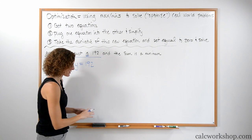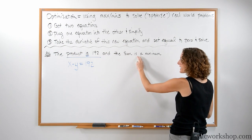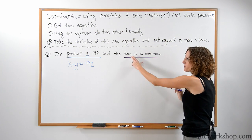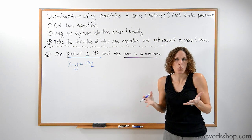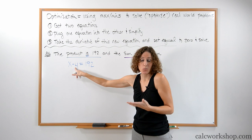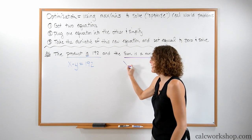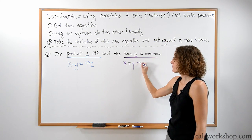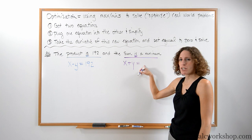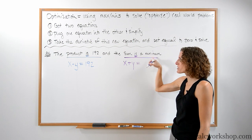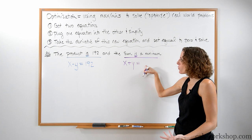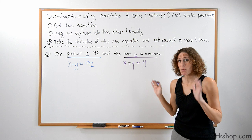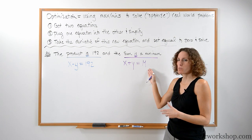Now the second equation: 'the sum is a minimum.' Sum means two things being added together. We already chose x and y, so the sum is x plus y. We don't know what it equals, so we can say m for minimum. I'll choose m because sometimes my s's look like fives. So x plus y equals m. That's our second equation.